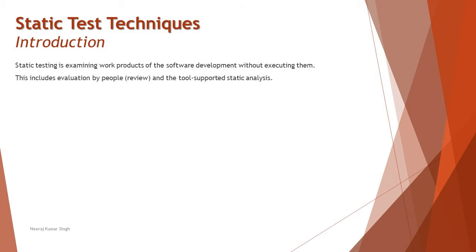Static testing also encompasses static analysis, which is generally for code reviews. Not all issues related to a coding defect can be found with the normal static testing approach of just reviewing them. So there is tool-supported static analysis, which is slightly different from static testing. It is completely specific to finding coding errors like variables declared but never used, standards compliance issues, unreachable or dead code — and coding standards can very well be verified with the help of these tools.